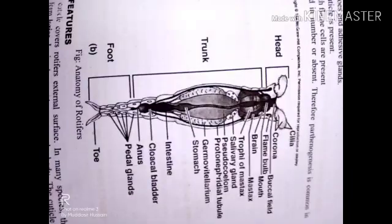Intestine and cloacal bladder: In some species, a ciliated intestine forms a cloacal bladder. It receives water from the protonephridia and eggs from the ovaries. It also receives digestive waste. The cloacal bladder opens to the outside by the anus. The anus is present at the junction of foot and trunk.